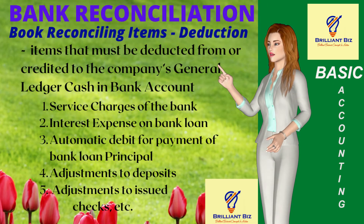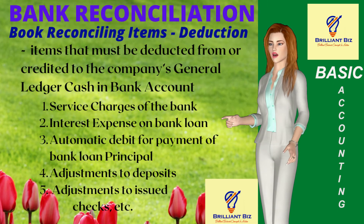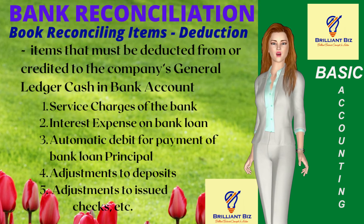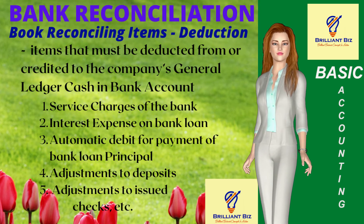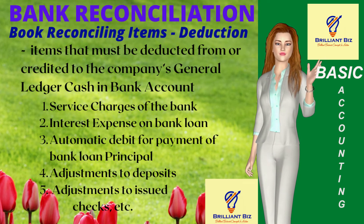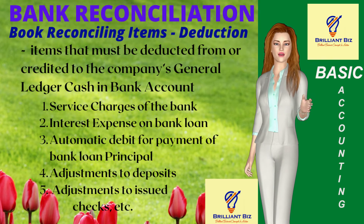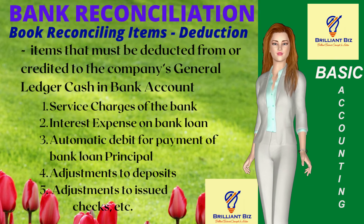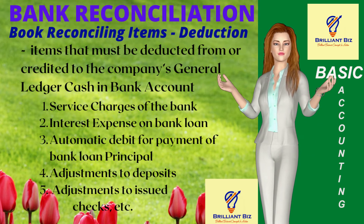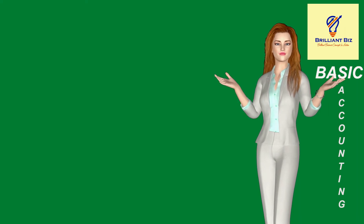The following are examples of book reconciling items that must be credited to the company's GL cash-in-bank account: service charges of the bank, automatic debit for payment of bank loans both principal and interest, adjustments to deposits, and adjustments to issued checks.